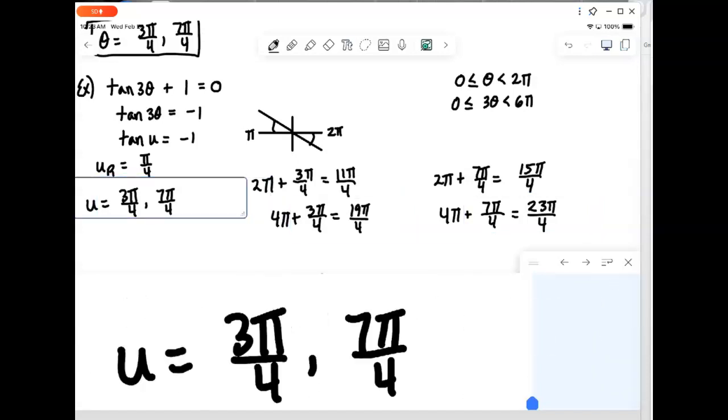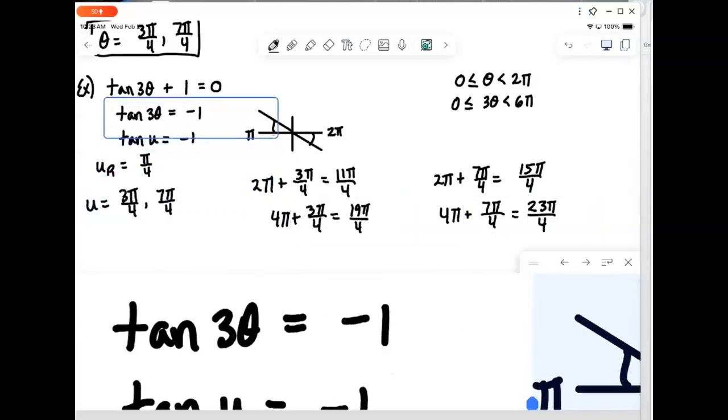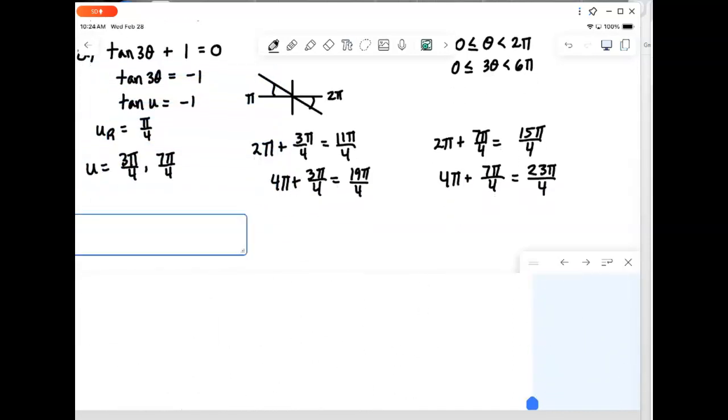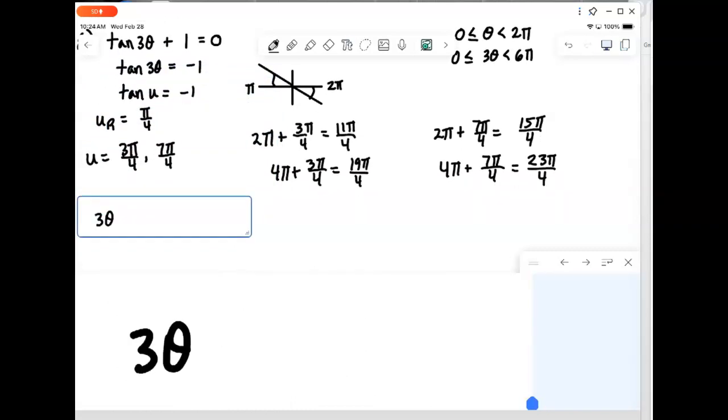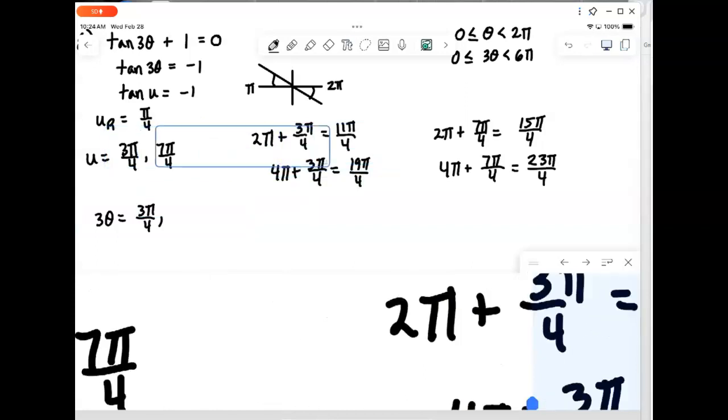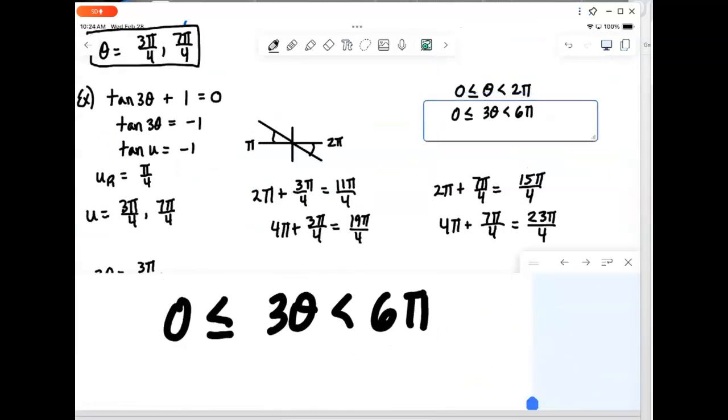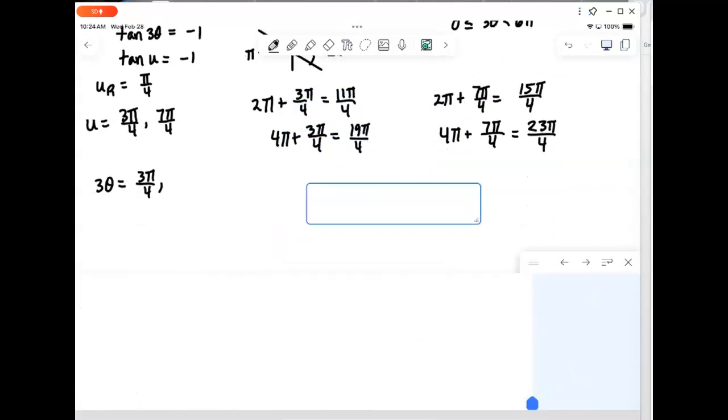So, those are all the answers for u. But, we don't want u. We want theta. So, we go back and realize u is replacing 3 theta. And, we set 3 theta equal to all of our potential answers. And, we know we have them all because we've now went back around the circle three times. And, that's what 6 pi is, three times around. So, if we kept going, we would be too far.